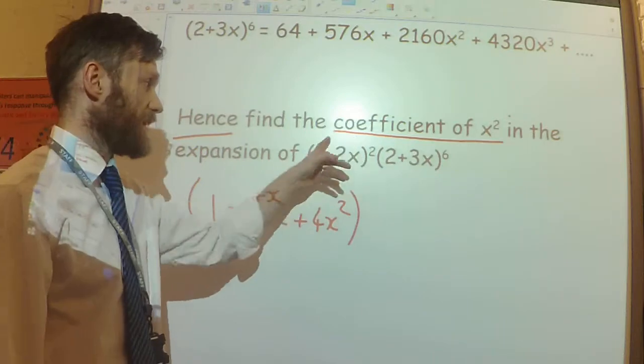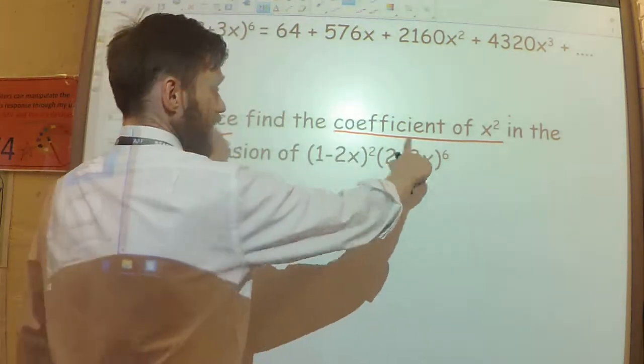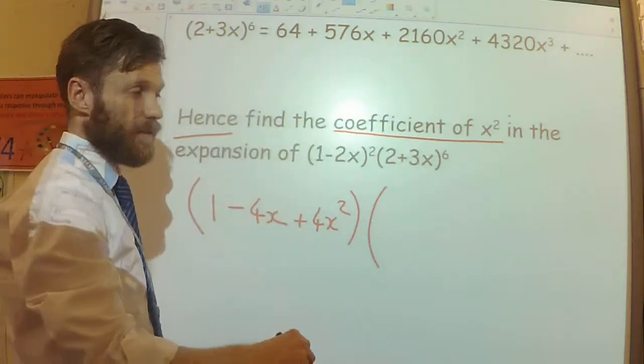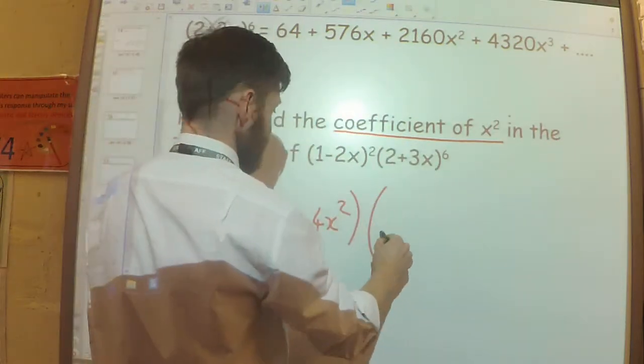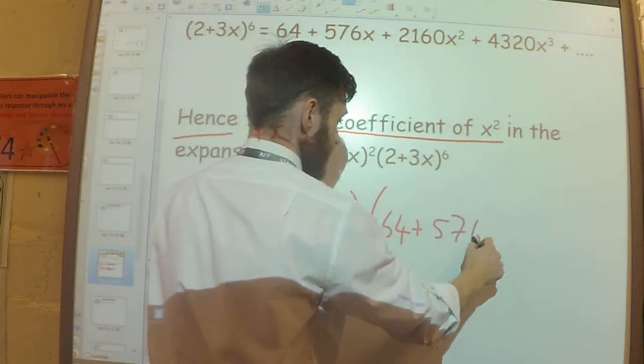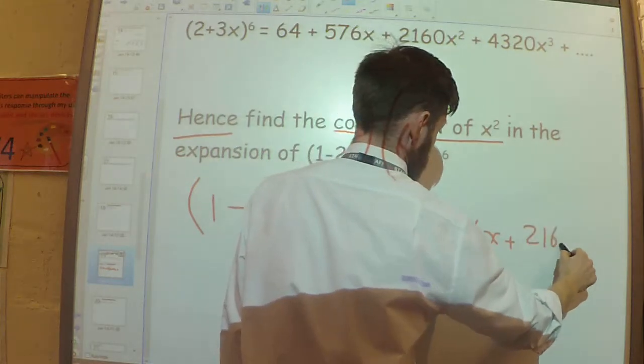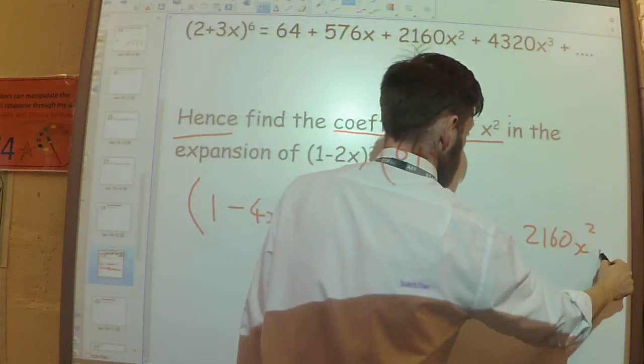And then the minus 2x times minus 2x is plus 4x squared. This is this. And that needs to be multiplied by everything I've worked out before. Now, I say everything, I'm not actually going to write it all down because I don't need every term to answer this question. In fact, I'm going to stop there.